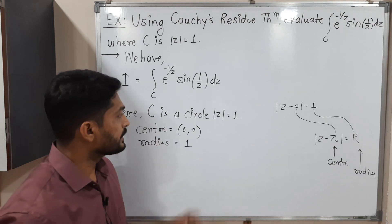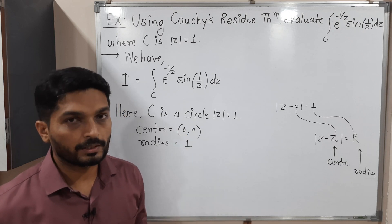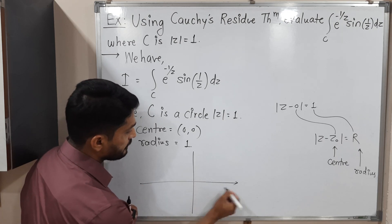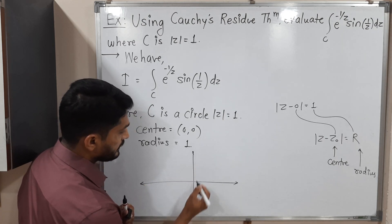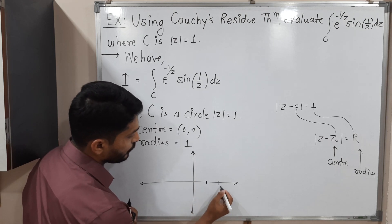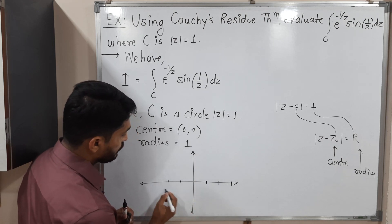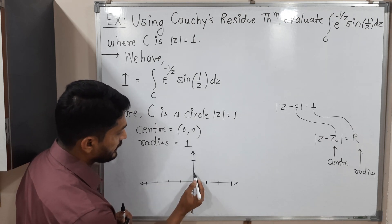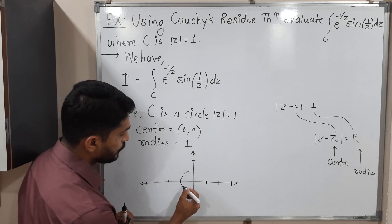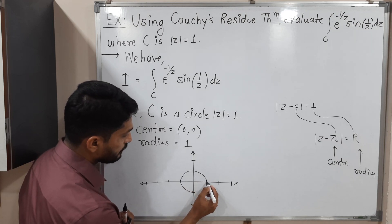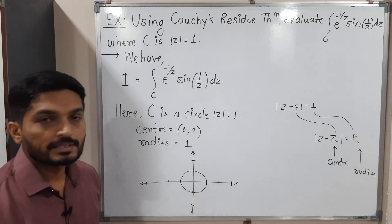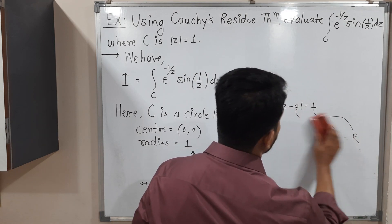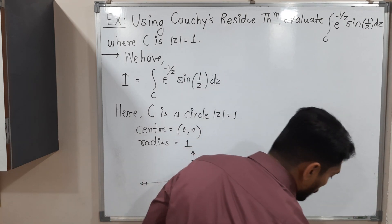So the center is (0, 0) and radius is 1. We draw the imaginary axis and real axis with scaling at 1, 2, 3 and -1, -2, -3 on both axes. We have a circle centered at the origin with radius 1. This is the given curve C.